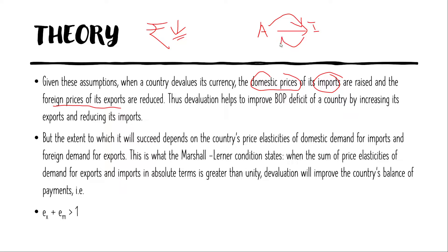We are going to sell the goods in India and export. If you are buying the goods in India, you will sell the goods in India. So, foreign prices of exports are reduced. This devaluation improves the balance of payment deficit by increasing its exports and decreasing its imports.